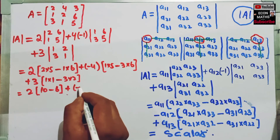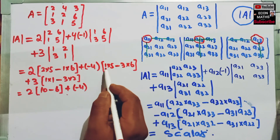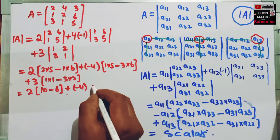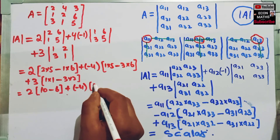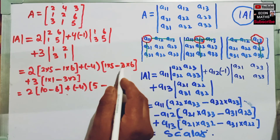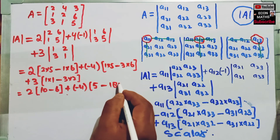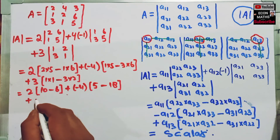This is minus 4. Here, 1 into 5 is 5, minus 3 times 6 is 18.